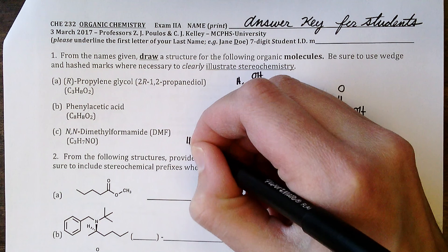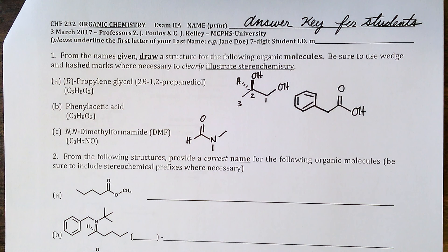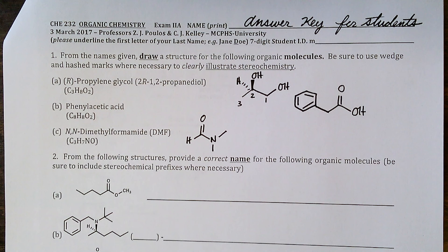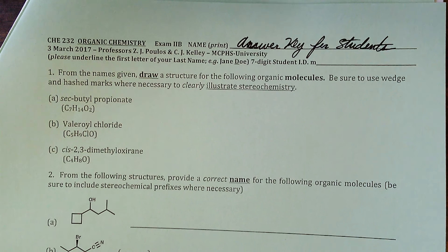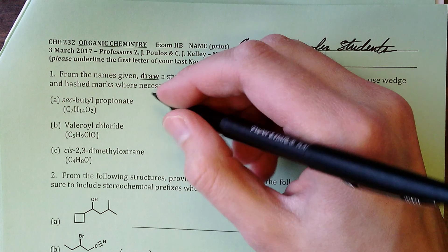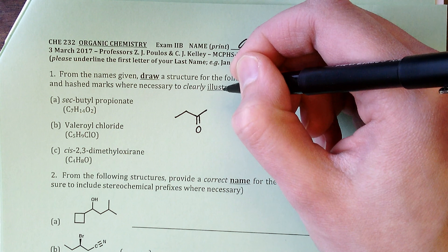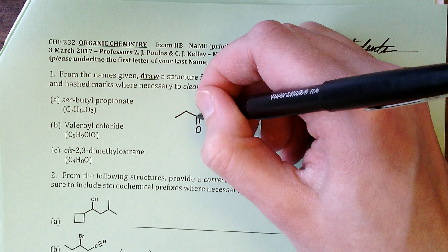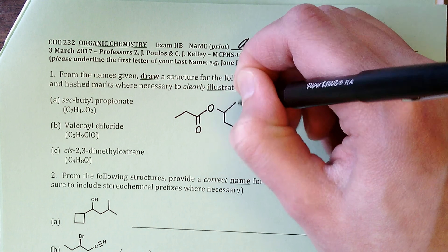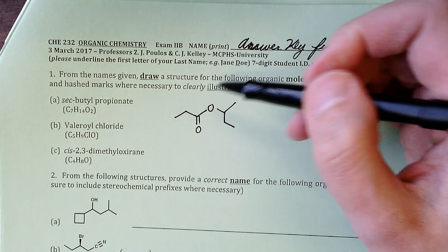DMF is an amide of formic acid (methanoic acid) with two methyl groups indicated by the dimethyl portion. For the structure-to-name on the B version, we had secondary butyl propionate — the secondary butyl ester of the three-carbon carboxylic acid propanoate or propionic acid, with one, two, three carbons and a secondary butyl group bonded to the oxygen.